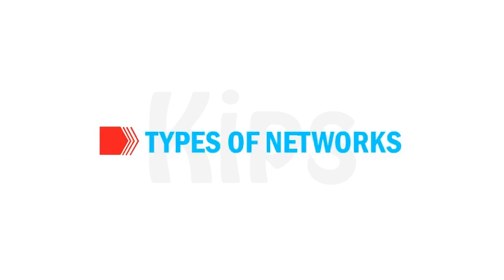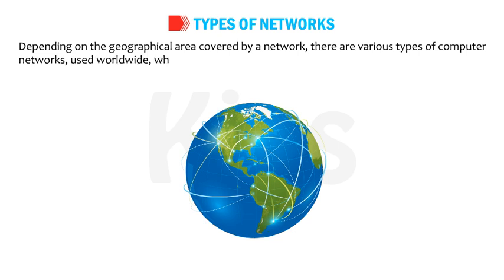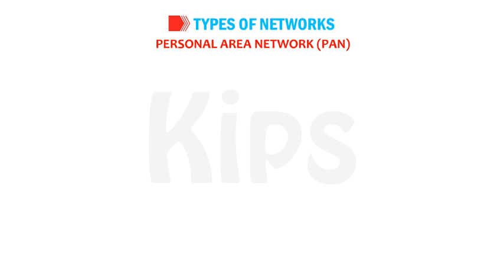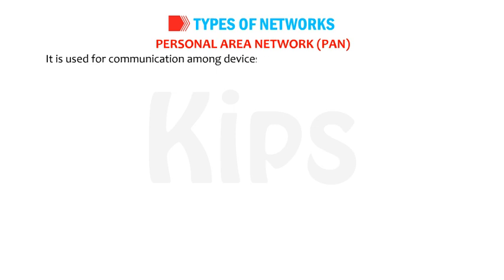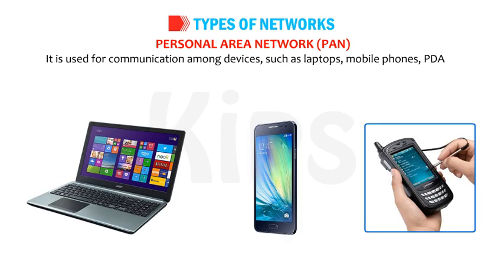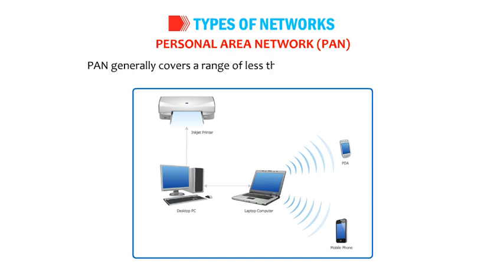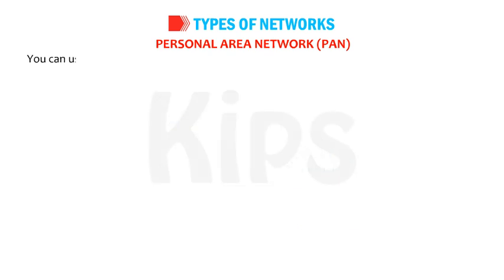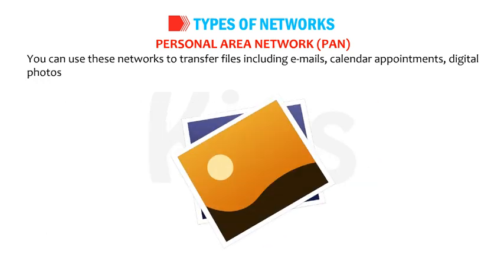There are various types of computer networks, depending on the geographical area covered. Personal area network (PAN) is a computer network mainly created for an individual person, used for communication among devices such as laptops, mobile phones, PDAs, or smartphones. PANs can be either wired or wireless. PAN generally covers a range of less than 10 meters (about 30 feet). You can use these networks to transfer files, including emails, calendar appointments, digital photos, and music.